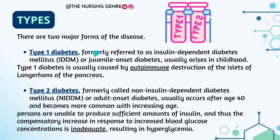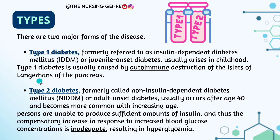There are two major forms of diabetes. Type 1 diabetes, formally referred to as insulin-dependent diabetes mellitus, is juvenile-onset diabetes mellitus. It usually arises in childhood and is usually caused by autoimmune destruction of the islets of Langerhans of the pancreas.